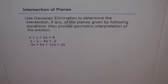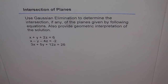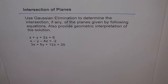Intersection of Planes. Use Gaussian elimination to determine the intersection, if any, of the planes given by the following equations. Also provide a geometric interpretation of the solution. The planes are: x plus y plus 2z equals 6, x minus y minus 4z equals minus 2, and 3x plus 3y plus 12z equals 26.